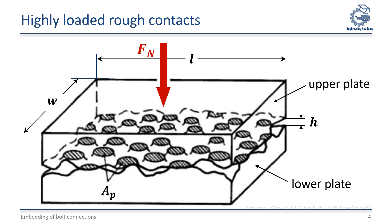The pressure in the contact area is not uniform and homogeneous. Rather, only the roughness peaks of one plate touch the other plate. So the real contact area is much smaller than the nominal contact area L times W.